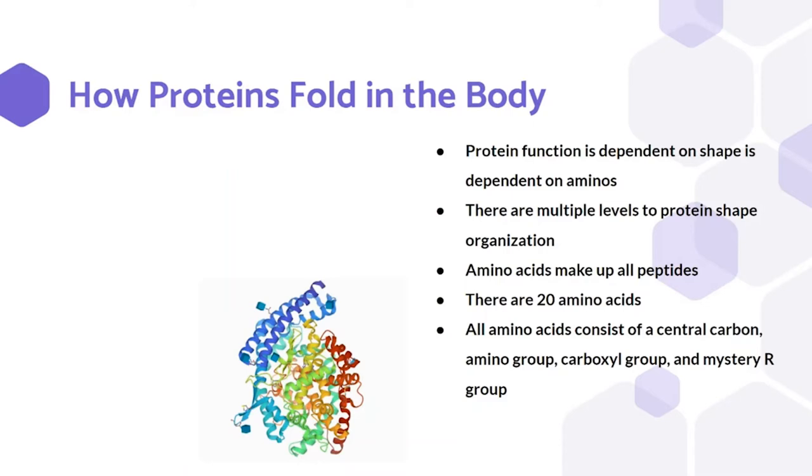Protein structure is organized into multiple levels. Amino acids are linked by peptide bonds and are the fundamental building blocks of proteins. There are 20 amino acids where each consists of a central carbon, amino group, carboxyl group, and mystery R group. This R group is responsible for each amino's chemical properties as it changes between each amino.